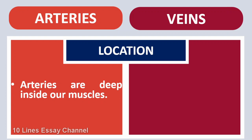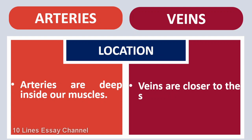Arteries are deep inside our muscles. Veins are closer to the surface of the body.